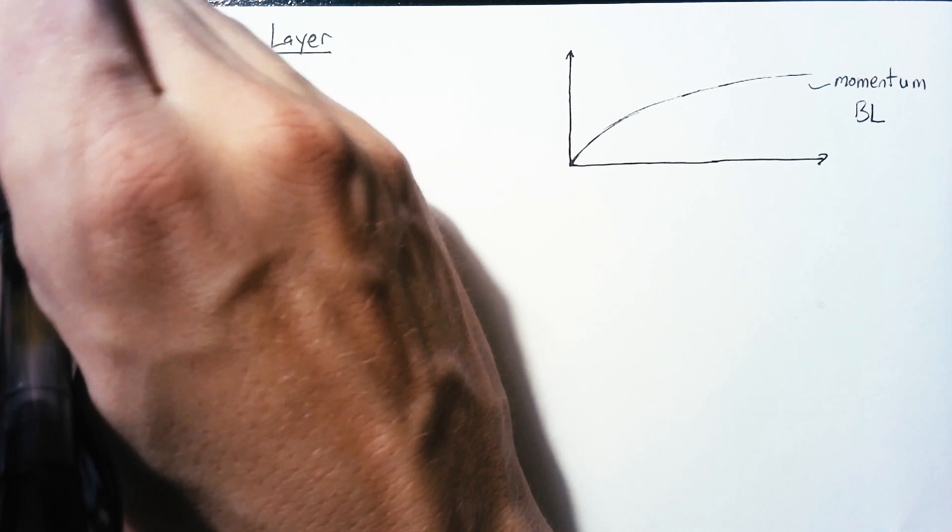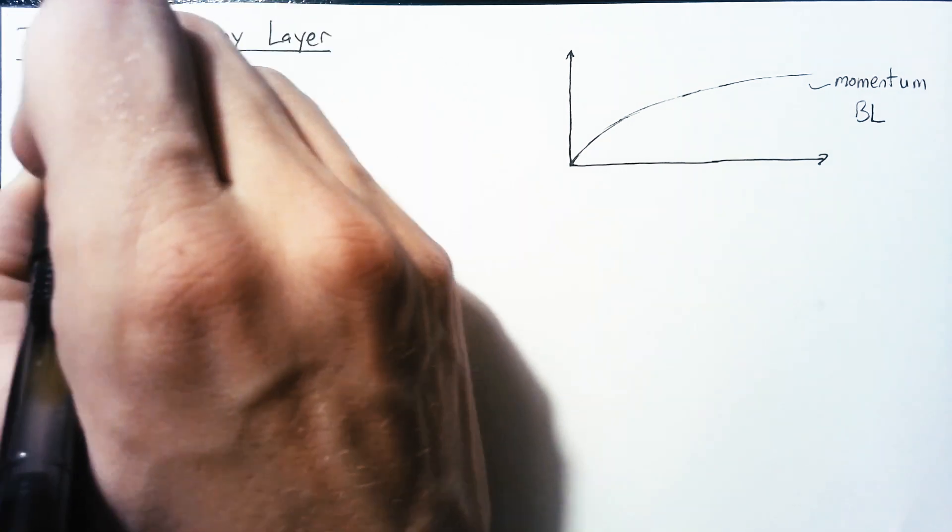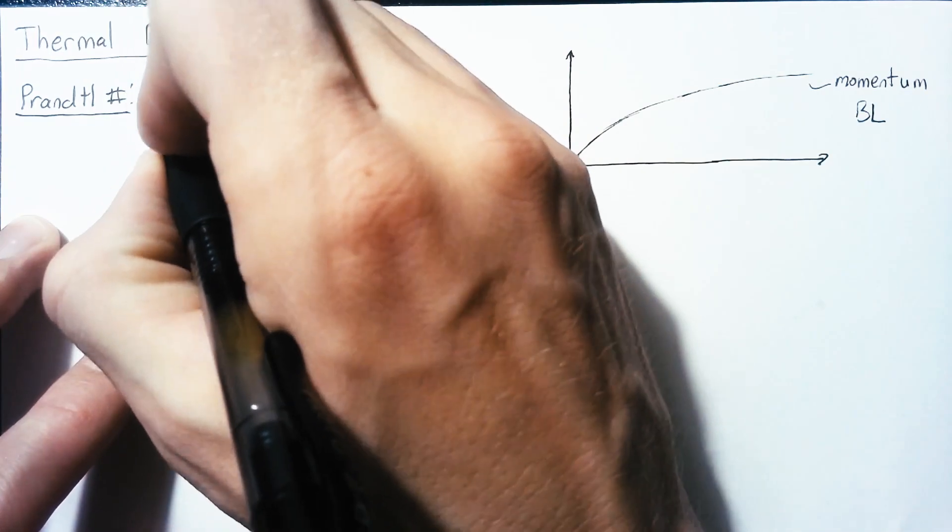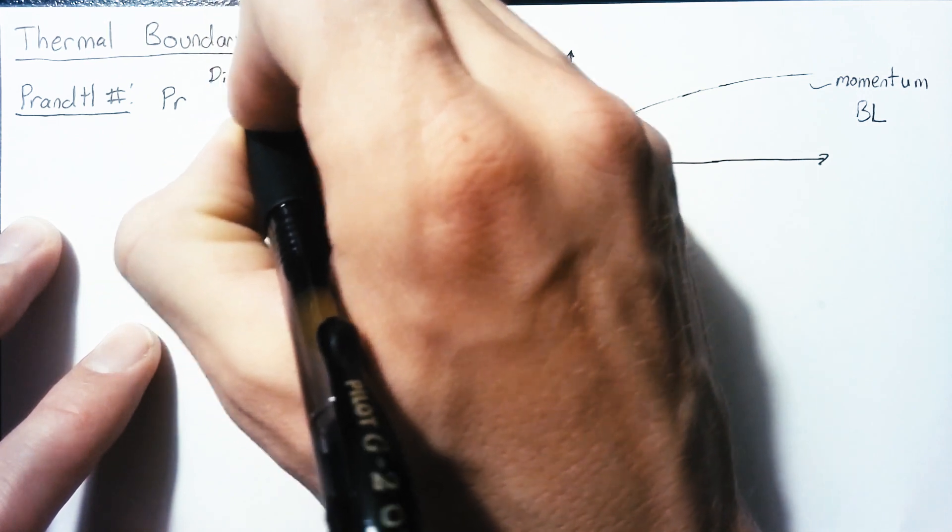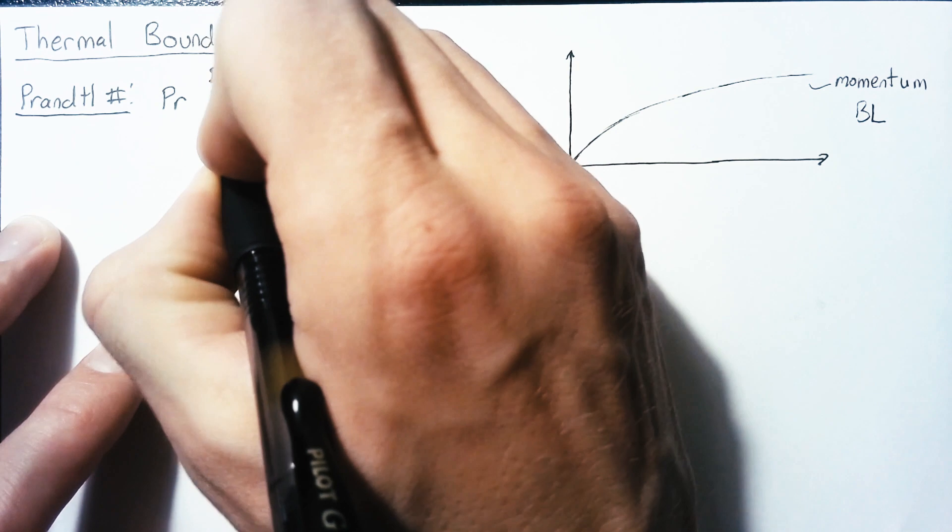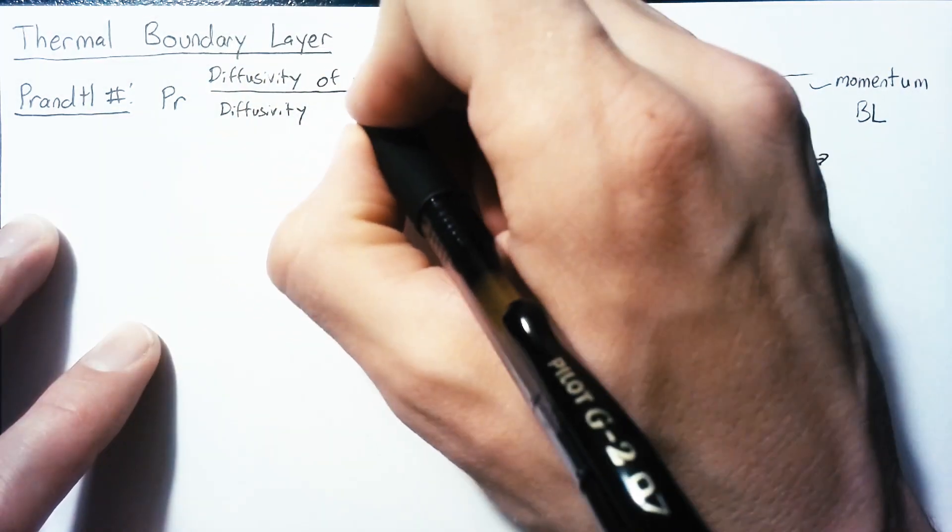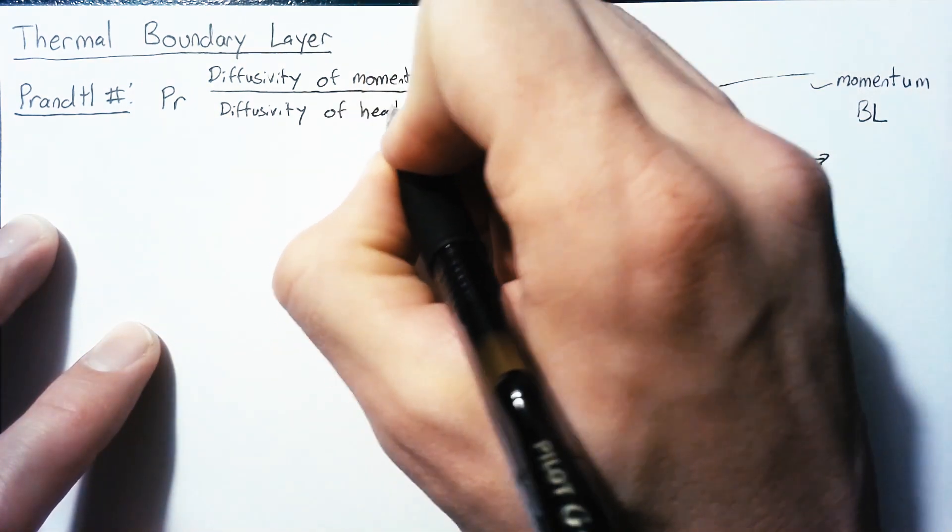The thermal boundary layer does very much the same thing, but its shape is going to be a little bit different. That shape is dependent on something called the Prandtl number. The Prandtl number is non-dimensional and it's another ratio. This time it's a ratio of diffusivities. On the top, we have the diffusivity of momentum, and on the bottom, we have the diffusivity of heat.